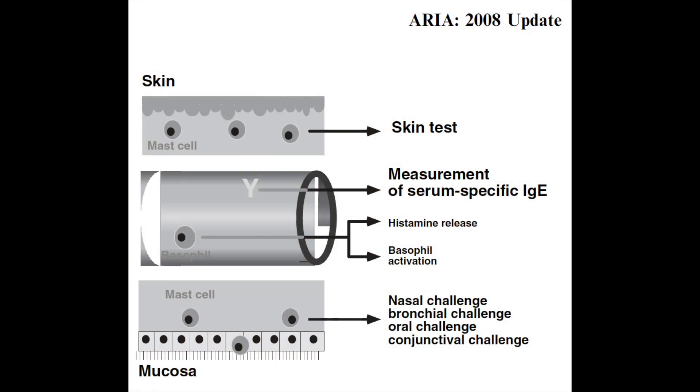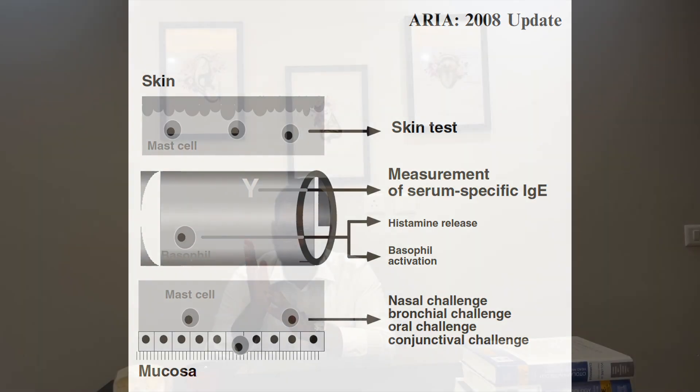Moving on to the diagnosis. The diagnosis of allergy is confirmed by various tests. In vitro tests like total and specific IgE levels, absolute eosinophil count, and basophil activation tests are available. In vivo testing includes skin tests. Provocation tests include bronchial challenge test, nasal provocation test, and food challenge test. Supportive investigations include nasal endoscopy, radiological investigations, spirometry, and fractional concentration of exhaled nitric oxide.